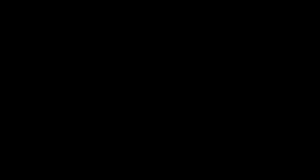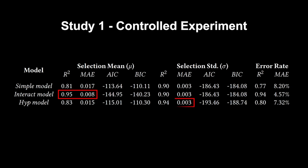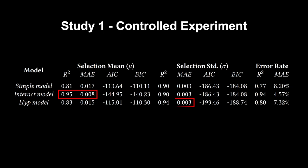To evaluate our models, we conducted our first study in a controlled VR experiment, where we evaluated different model variants and compared the impact of the corresponding factors in temporal and spatial target selection. We demonstrated that the proposed models provide accurate prediction results and are robust under cross-validation tests.